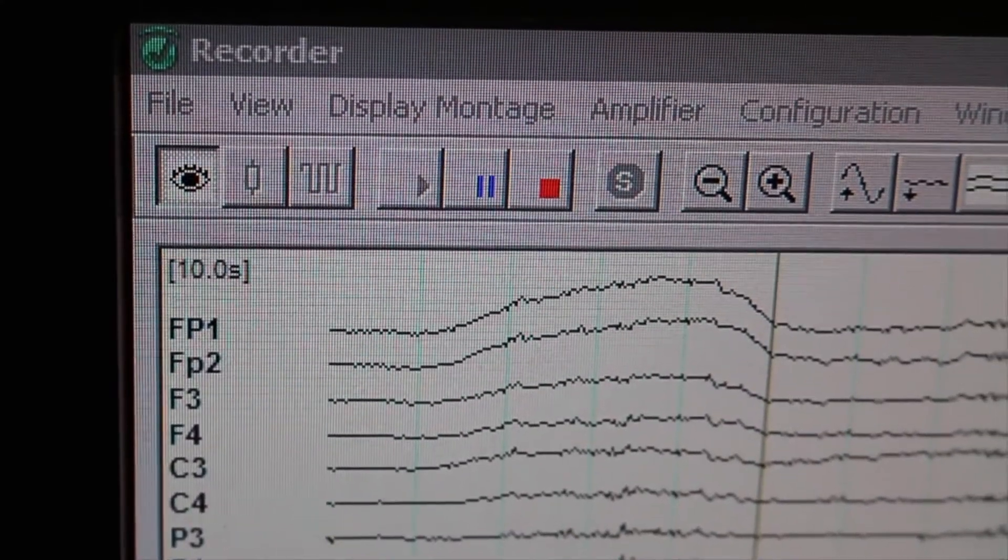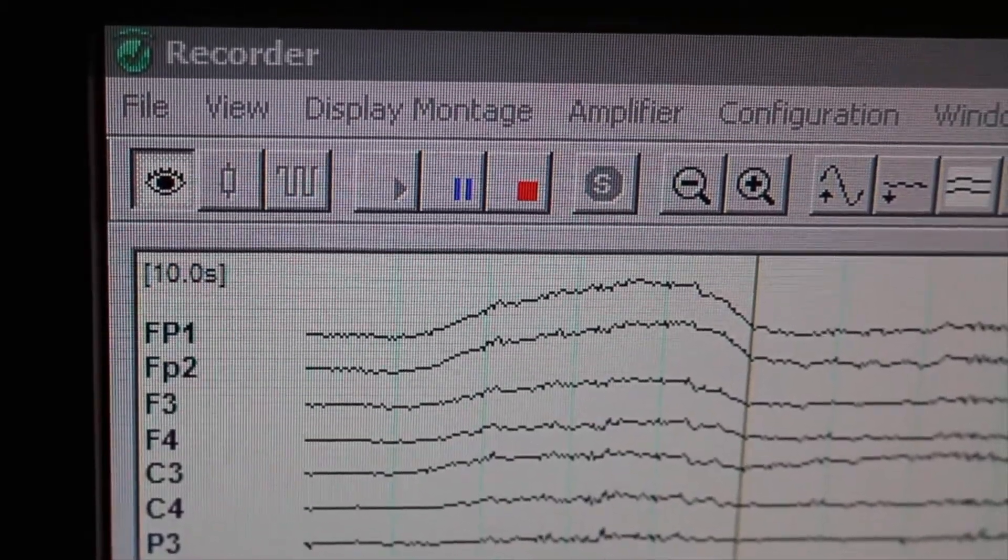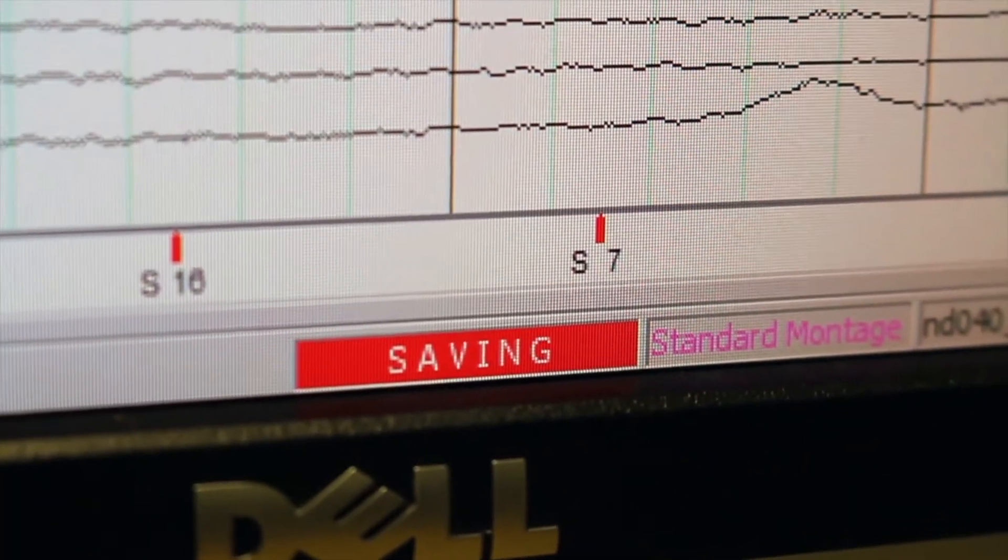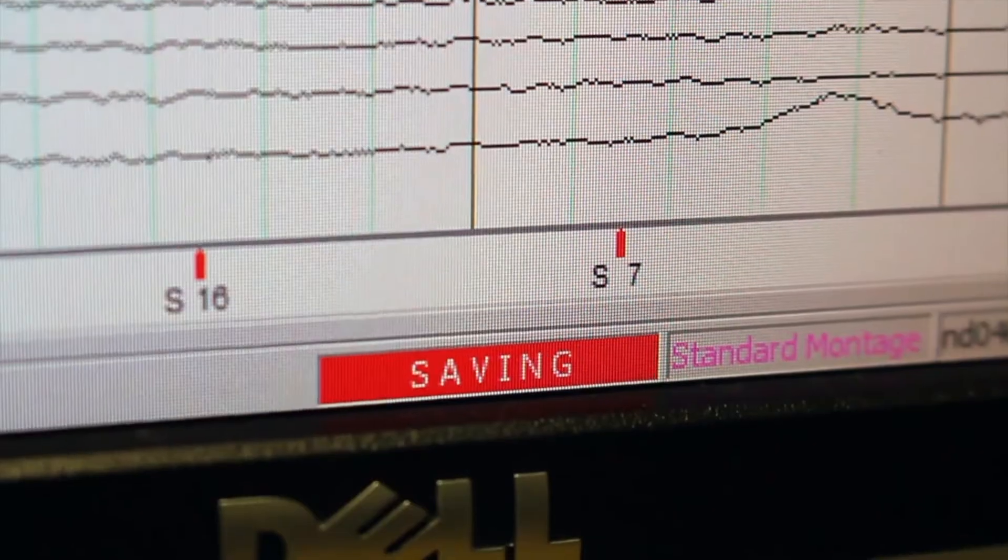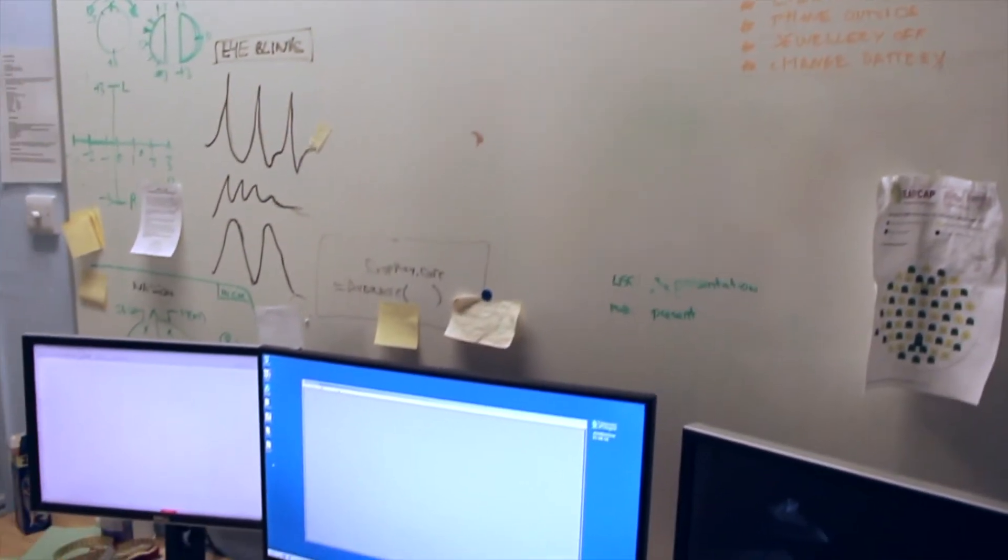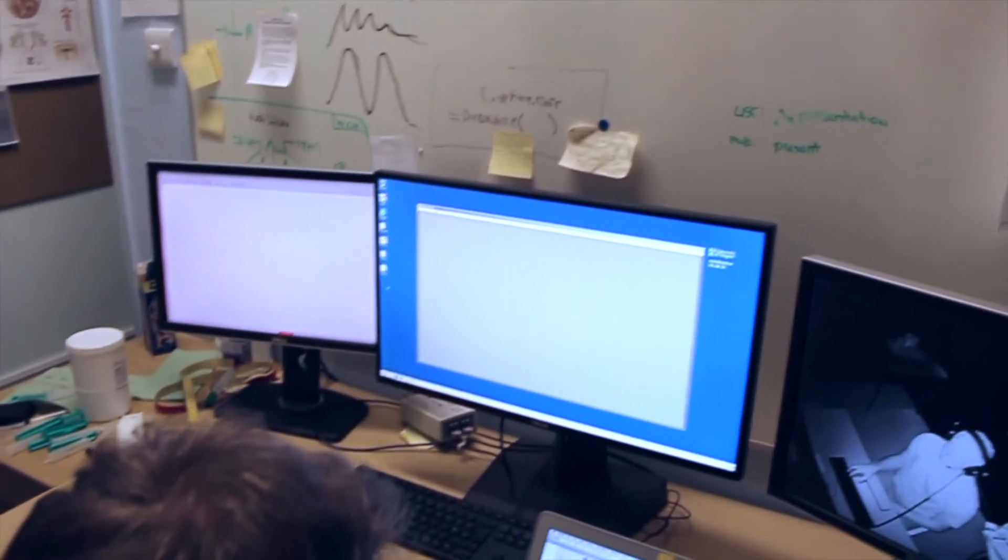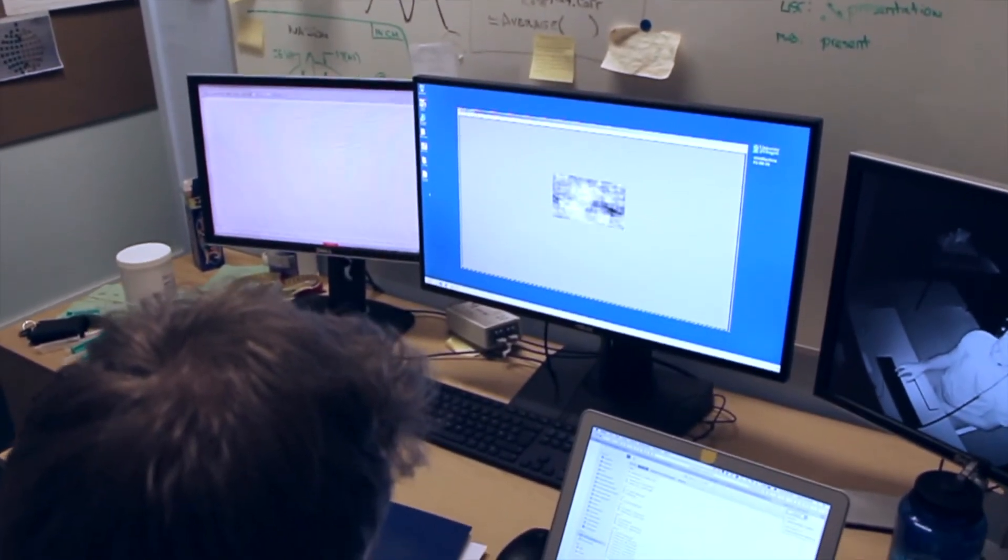Once you are ready, begin recording the EEG data in the monitor and ask the participant to start your task. You may be able to use a screen viewer program, such as VNC, to mirror your participant's screen and keep an eye on where they are in the experiment.